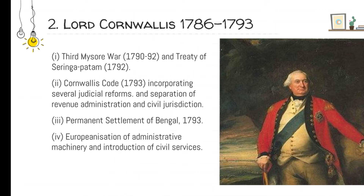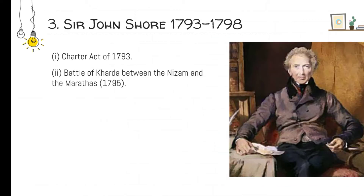The Cornwallis Code of 1793 introduced all major judicial reforms. It is said that modern judiciary and civil services are based on his contributions. The Permanent Settlement system of revenue collection in Bengal was introduced in 1793. Europeanization of the administrative machinery was introduced — Indians would not get pay above a certain fixed level. The Charter Act of 1793 also came during this period. The Battle of Kharda between the Nizam and Marathas took place in 1795.